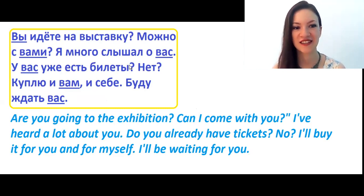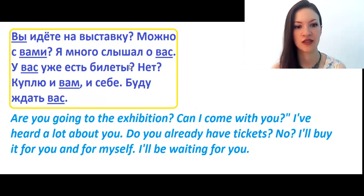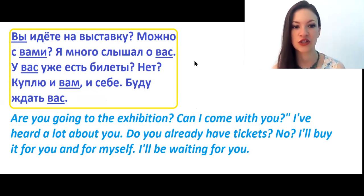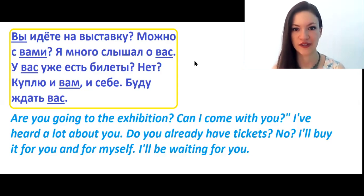Let's practice. The sentences are: Вы идёте на выставку. Можно с вами? Я много слышал о вас. У вас уже есть билеты? Нет? Куплю и вам, и себе. Буду ждать вас. — Вы идёте на выставку: 'вы' is the subject because it is the active person in the sentence.